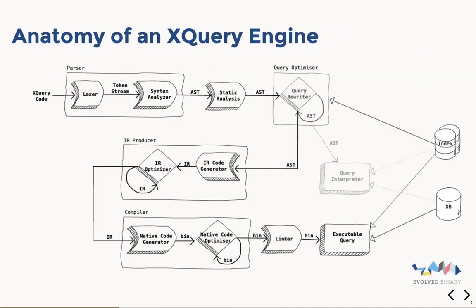So what does an XQuery engine typically look like internally? At a high level, it consists of several parts. There's always pretty much a parser at the front — you present your XQuery code as either a file or a string of text, and the parser performs some lexical analysis, then some syntax analysis, eventually generating an AST, an abstract syntax tree. From this abstract syntax tree you can eventually do interesting things.